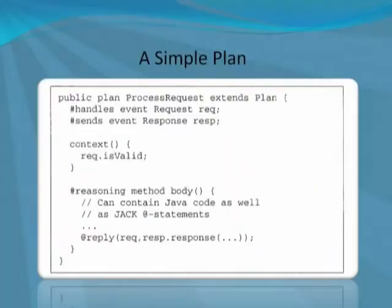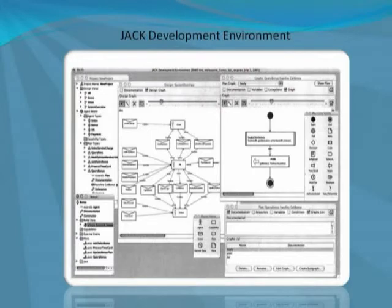This is part of code that shows how a simple plan looks — this one is about processing requests and responses. The following diagram gives a brief idea about the development environment used for JACK. As illustrated, it has a lot of visual aids to make programming easier.